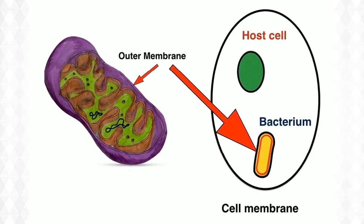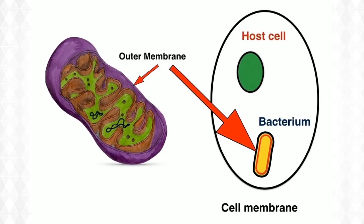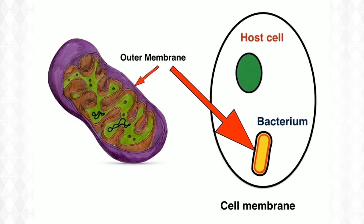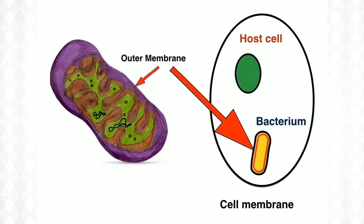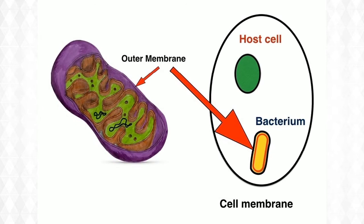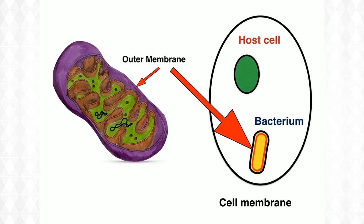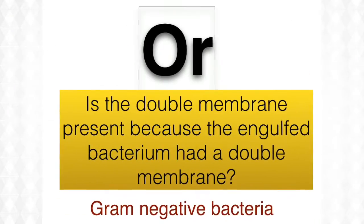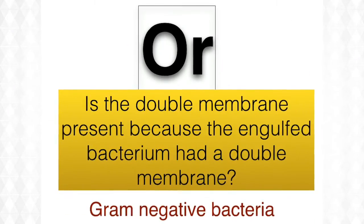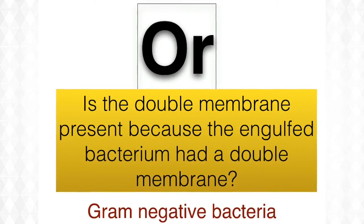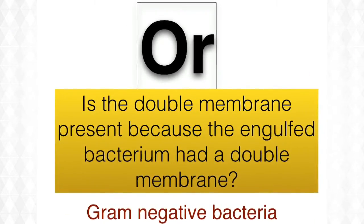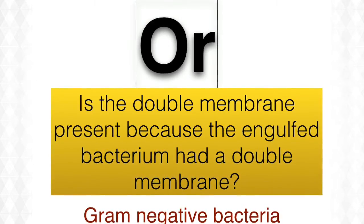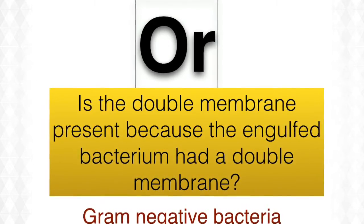It is believed by some scientists that the original bacterium, as it was engulfed, entered through the host cell's membrane, was surrounded by a vesicle, and it is this that gave rise to the outer membrane of the mitochondrion. Or, as some scientists believe, the original bacterial ancestor that was engulfed was a gram-negative bacterium, and these have two membranes.